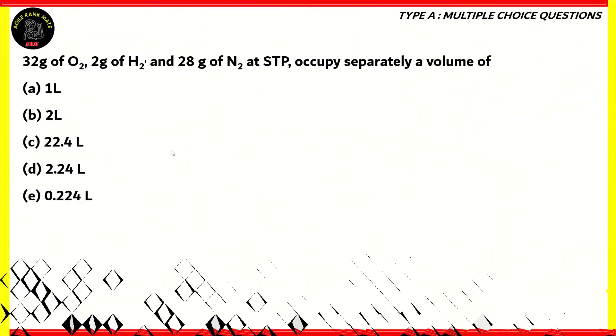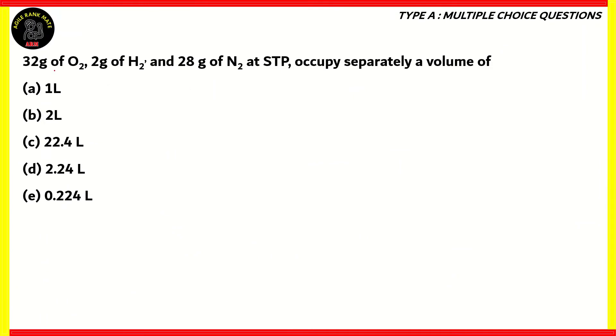Let's look at this question. 32 grams of oxygen, 2 grams of hydrogen, and 28 grams of nitrogen at standard temperature and pressure occupy separately a volume of: (a) 1 liter, (b) 2 liter, (c) 22.4 liters, (d) 2.24 liters, (e) 0.224 liters. Now, in order to solve this question, we need to calculate the volume of all the three samples separately. So we have 32 gram oxygen, 2 grams of hydrogen, and 28 grams of nitrogen.